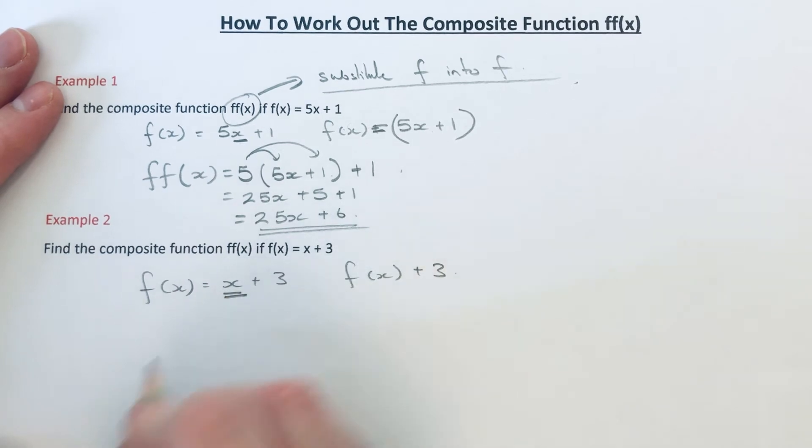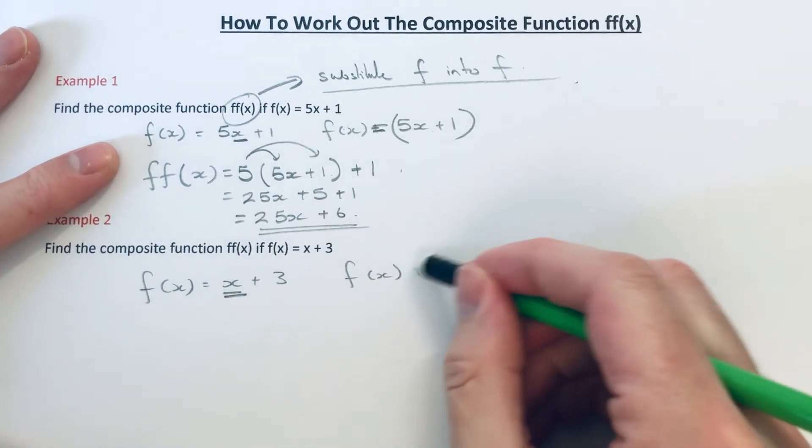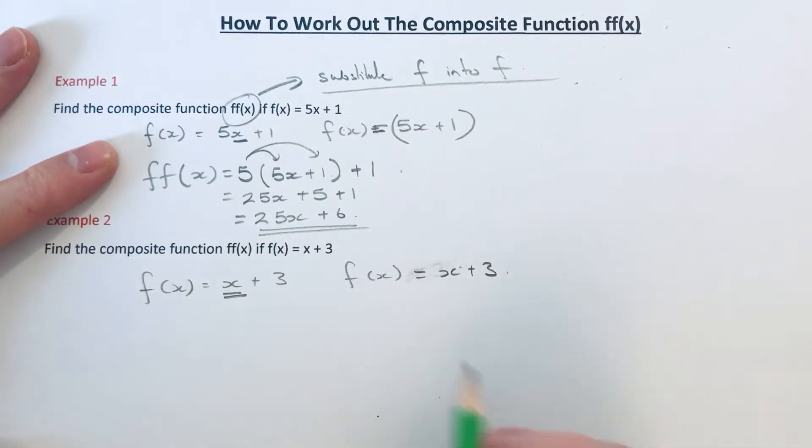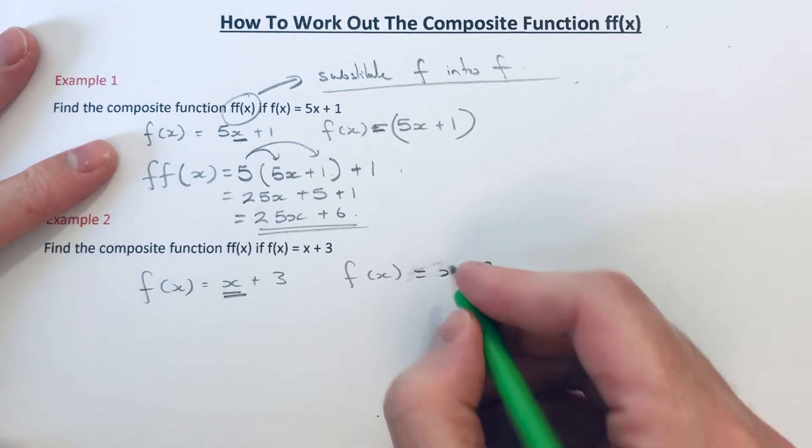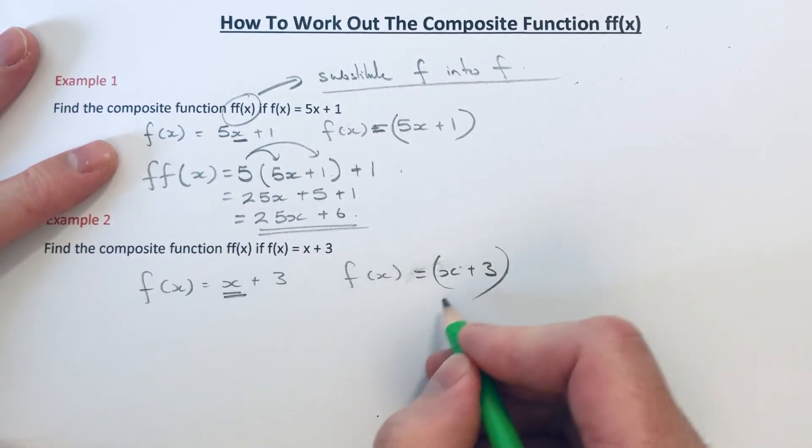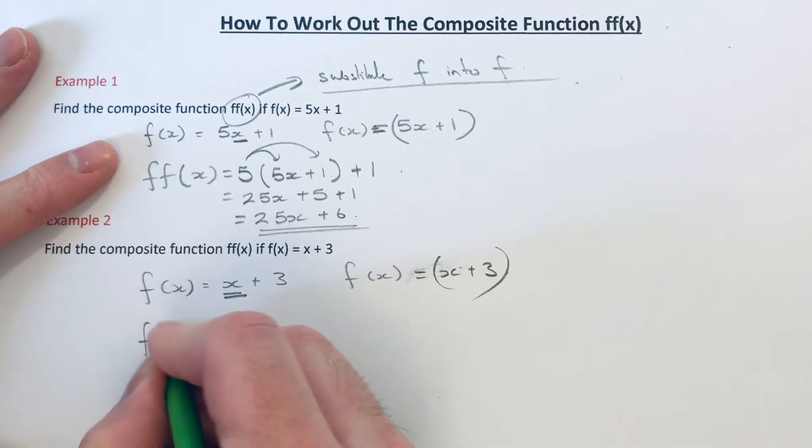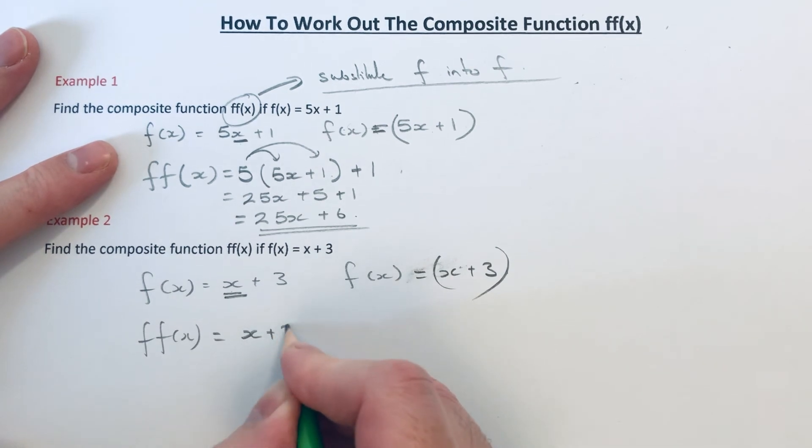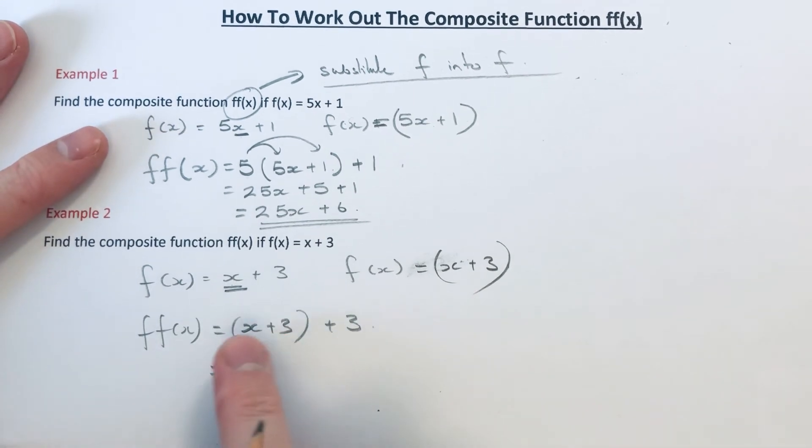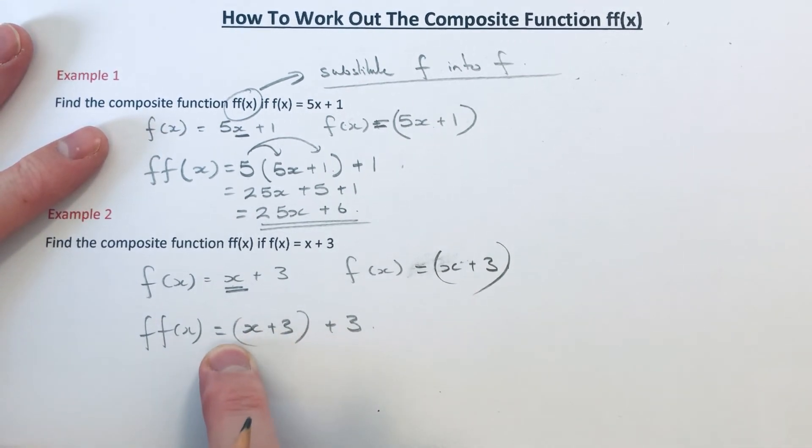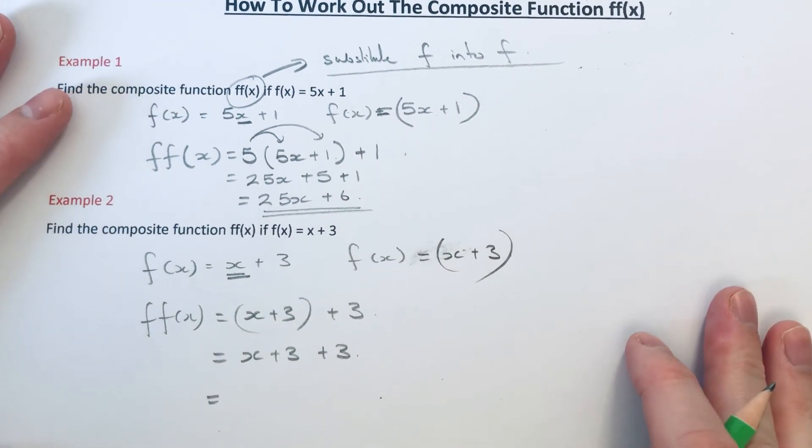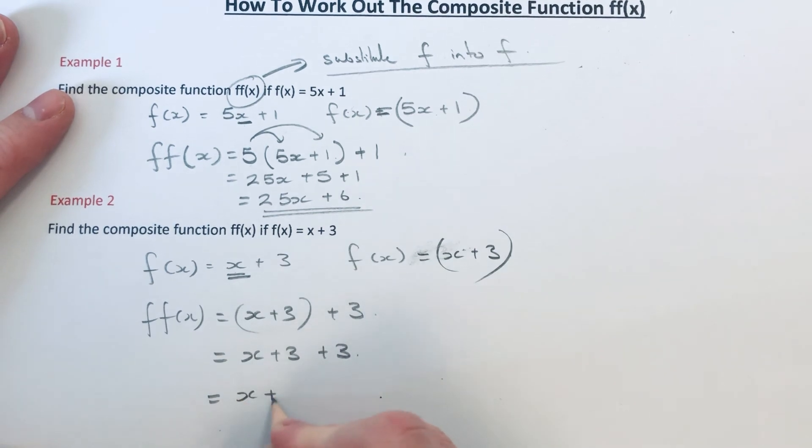So we just need to change the x in our first function with the second function of f which is x plus 3. So if we put this into a bracket, so that x becomes x plus 3. We're not really multiplying by anything in front of the bracket, so we can get rid of this bracket now. So that will give us a final answer of x plus 6.